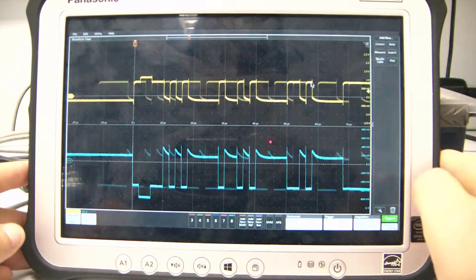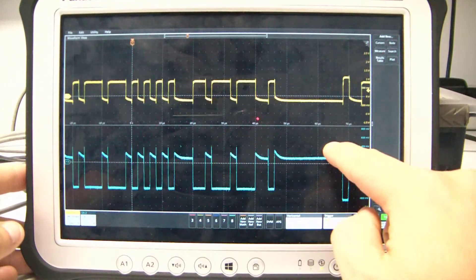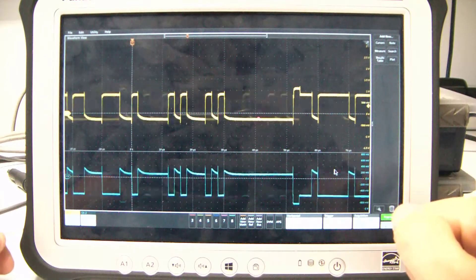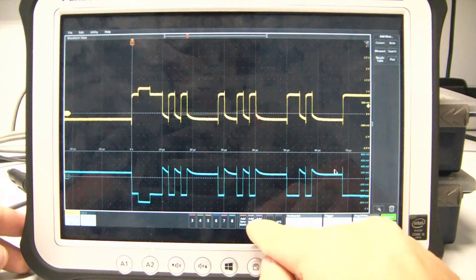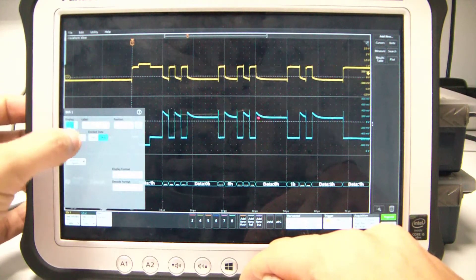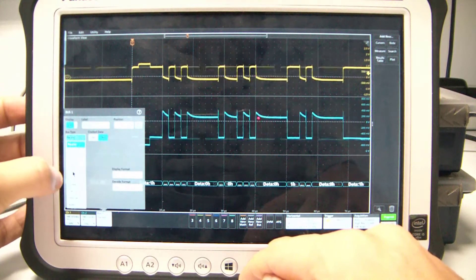I can, for example, allocate more space to channel 1 if I wish. I can bring up a bus decode. So let's decode this CAN bus. So I select CAN bus.